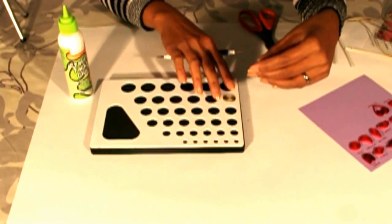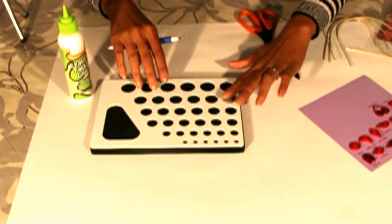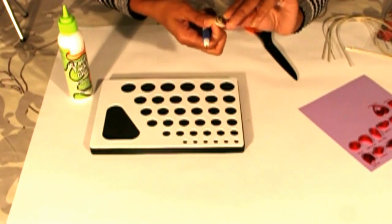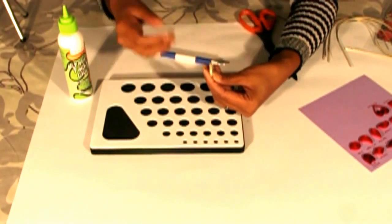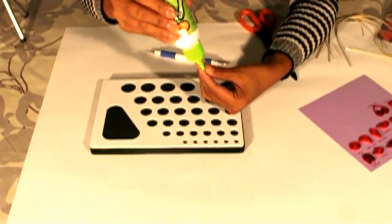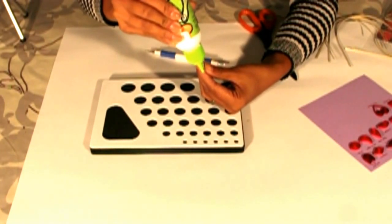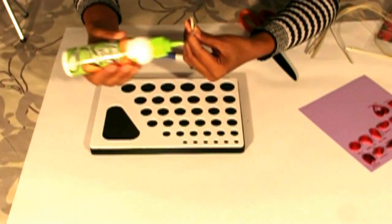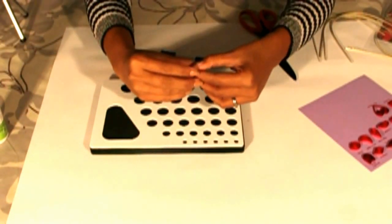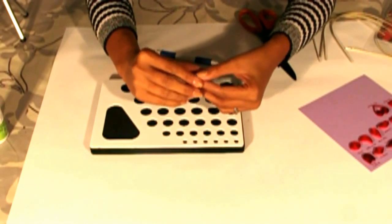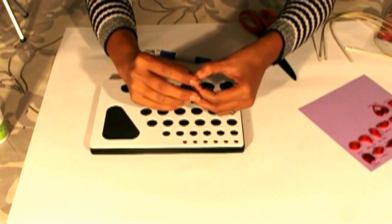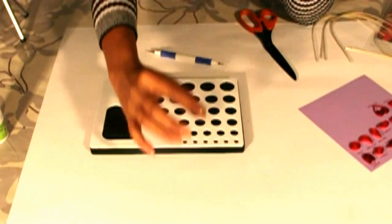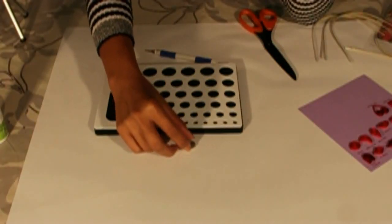Then put it in a quilling board to make it free and get it from the quilling board and put some glue at the end of the paper. And close it just like this. So we now have the loose coil.